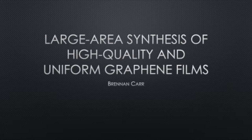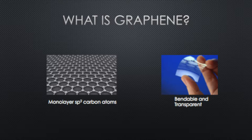In this presentation, we're going to talk about the large area synthesis of high quality and uniform graphene films. So what is graphene? Graphene is a monolayer of sp2 carbon atoms. Think of graphite—how you have sheets of carbon atoms stacked on top of one another with van der Waals forces in between.